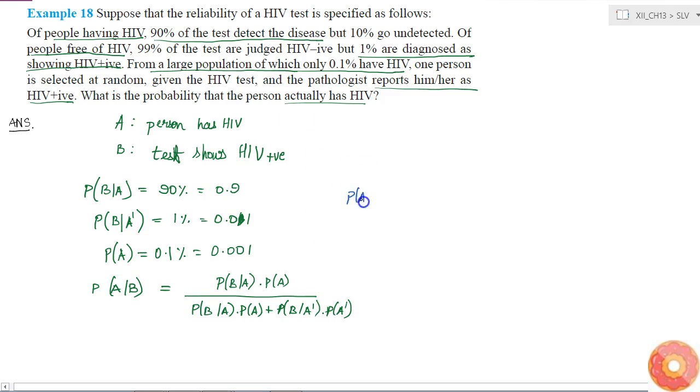Probability of A complement is equal to 1 minus probability of A, which is equal to 1 minus 0.001, which will be 0.999.